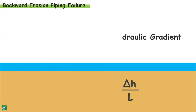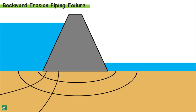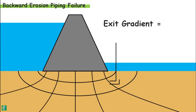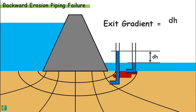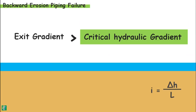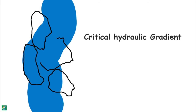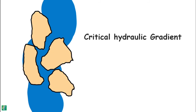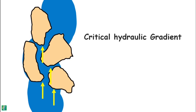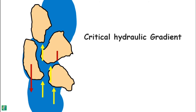If we draw the flow net for this particular flow condition, we may calculate the exit gradient as the drop of head through the last flow field divided by the length of the flow field. The critical hydraulic gradient is the hydraulic gradient at which water flowing upward through soil exerts a seepage force on soil particles that completely balances their weight, causing them to appear suspended in the water.